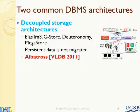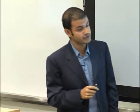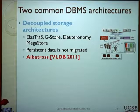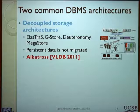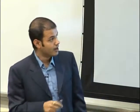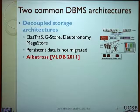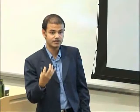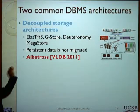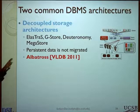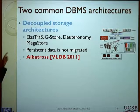There are two different approaches in which databases are designed. One approach, which we call decoupled storage, is where the transaction execution logic is decoupled from the storage logic. Examples include Elastras, GStore, Project Deuteronomy at Microsoft Research, and Google Megastore. Because your persistent data is stored in network-attached storage, when migrating you don't need to migrate the data — it boils down to migrating the execution state of the database: the transactions and the database cache. I propose the technique Albatross, implemented on top of Elastras, and this is a paper being presented at the upcoming VLDB.